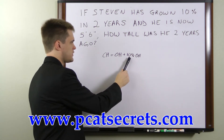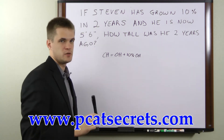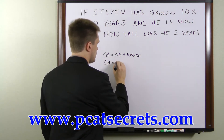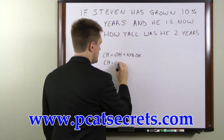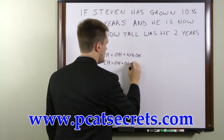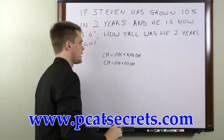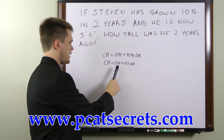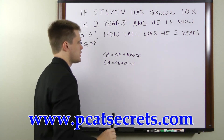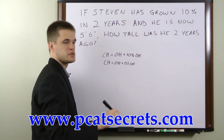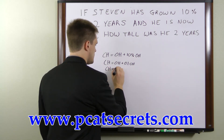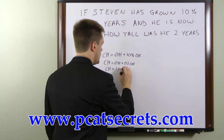So we're going to need to convert this percentage to a decimal. We can rewrite this as CH equals OH plus 0.1 OH. Now we can add these two together — this is 1 OH and this is 0.1 OH — so we can rewrite this as 1.1 OH.